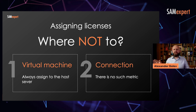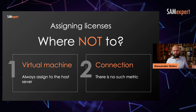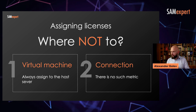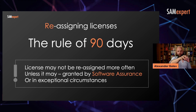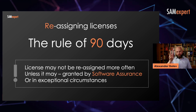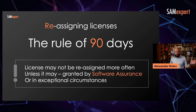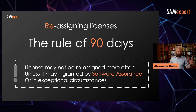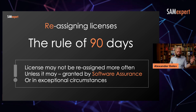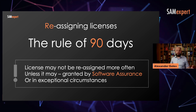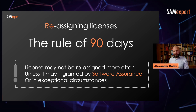Also: connections. There is no such metric as a connection — Microsoft doesn't have a metric called connection, so you don't license connections. When a license is assigned, it must stay where it's assigned for 90 days, with two exceptions: exceptional circumstances. If a user is sick, you may temporarily reassign that license to someone else. If a device is broken beyond repair, you may reassign the license to a different device.